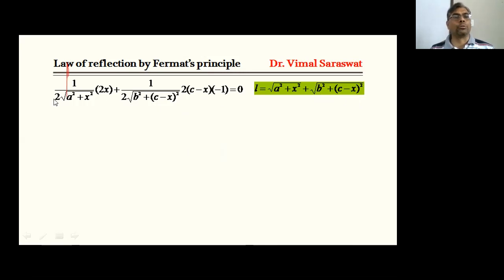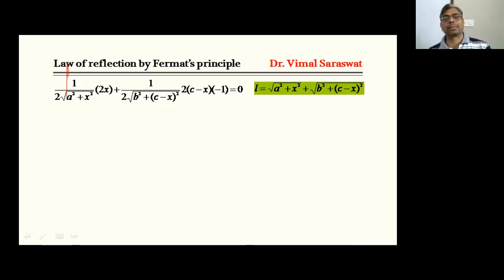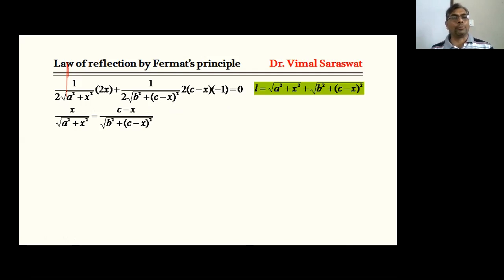The 2s cancel out, giving: x / √(a² + x²) − (c − x) / √(b² + (c − x)²) = 0, or x / √(a² + x²) = (c − x) / √(b² + (c − x)²).